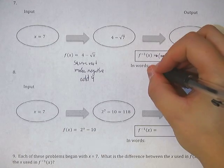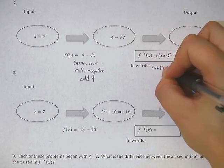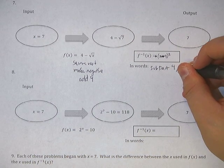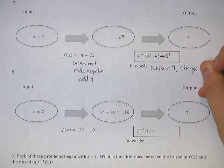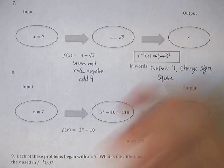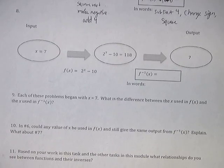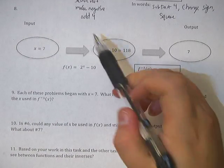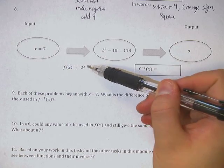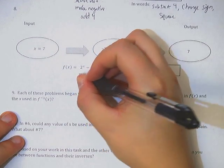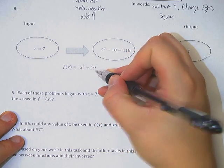Oh. This needs to be a subtract 4, doesn't it? Yep. Subtract 4. There we go. Okay. So it's going to be x minus 4 squared is what we end up with. Yeah. Yeah. That'll work. So we subtract 4, change sign, square.